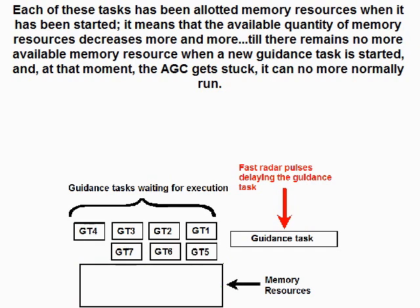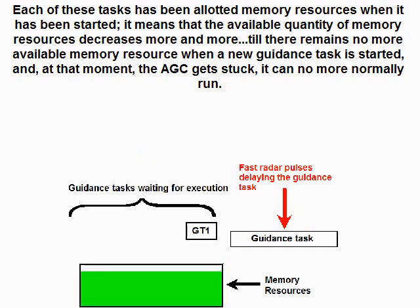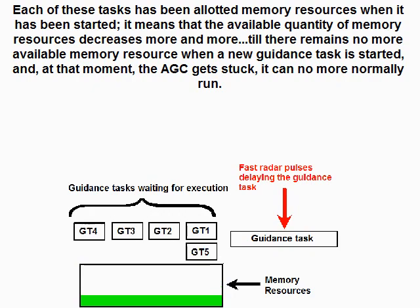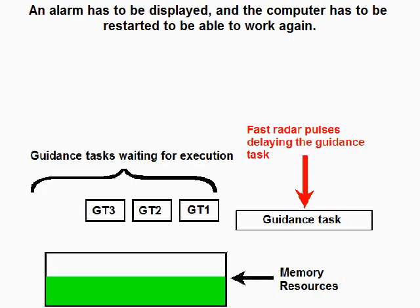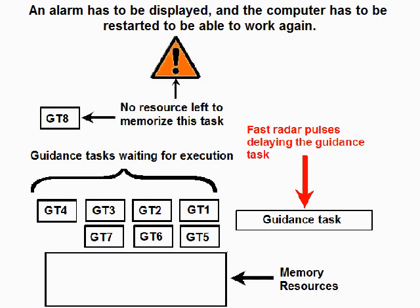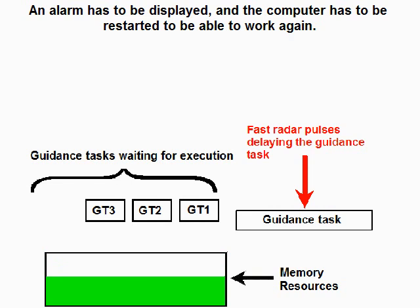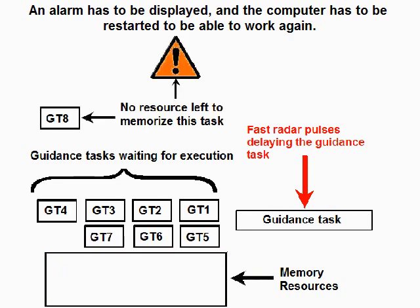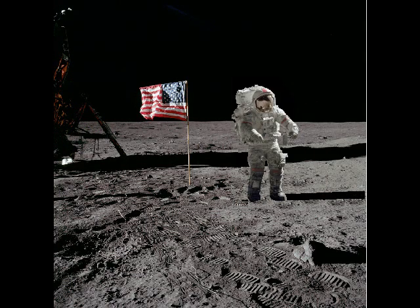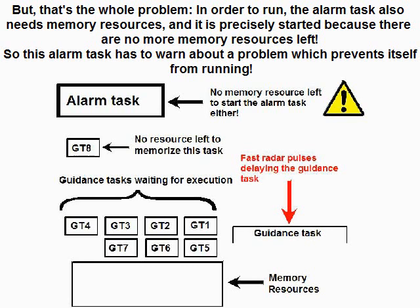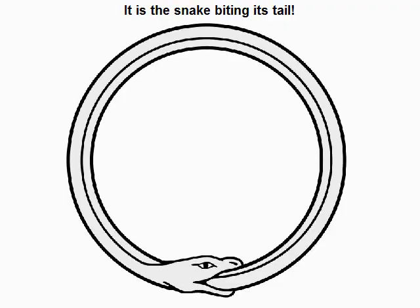When a new guidance task is started at that moment, the AGC gets stuck and can no longer run normally. An alarm has to be displayed and the computer has to be restarted to work again. But that is the whole problem: in order to run, the alarm task also needs memory resources, and it is precisely started because there are no more memory resources left. So this alarm task is meant to warn about a problem which prevents itself from running — it is the snake biting its tail.